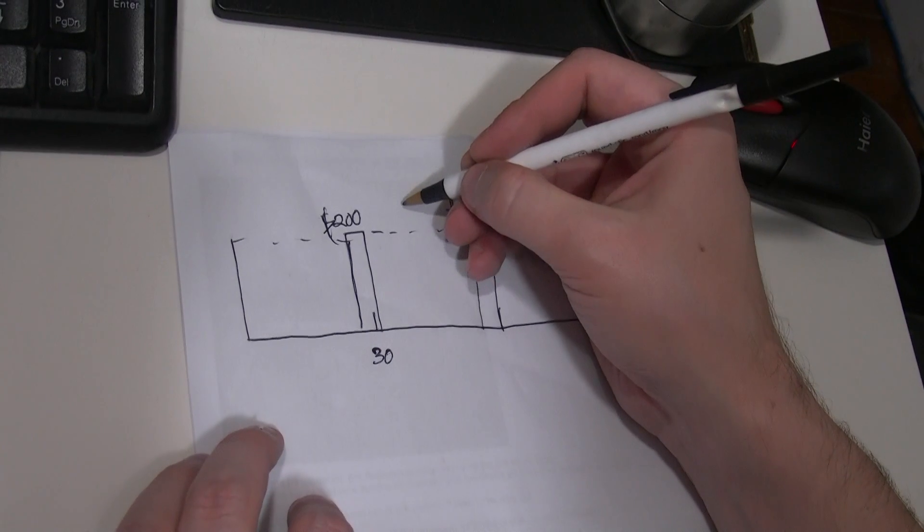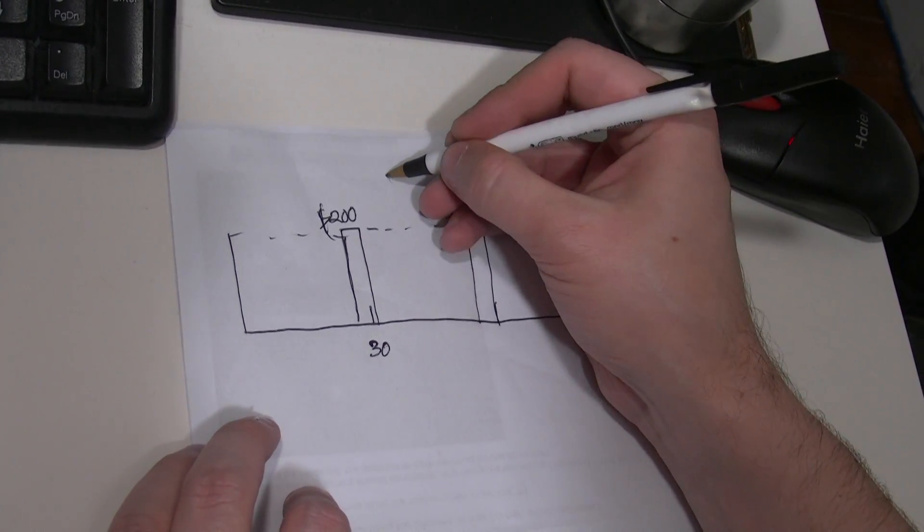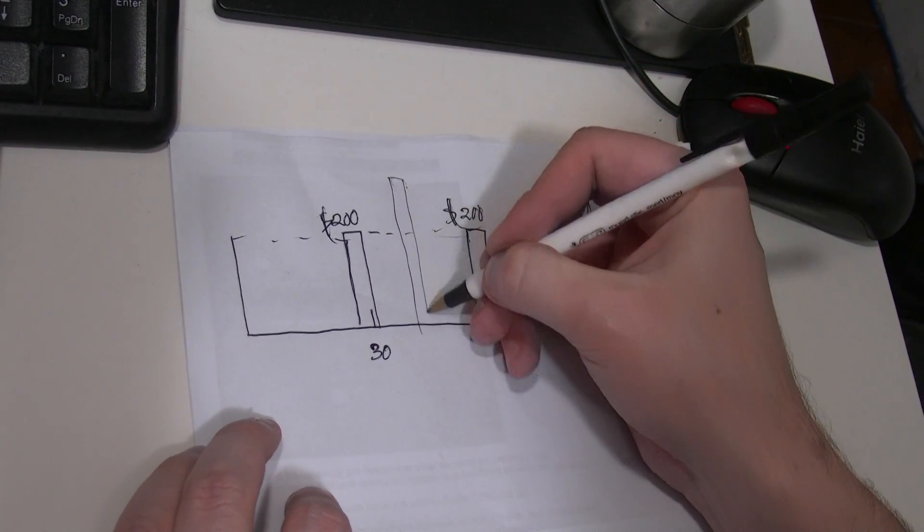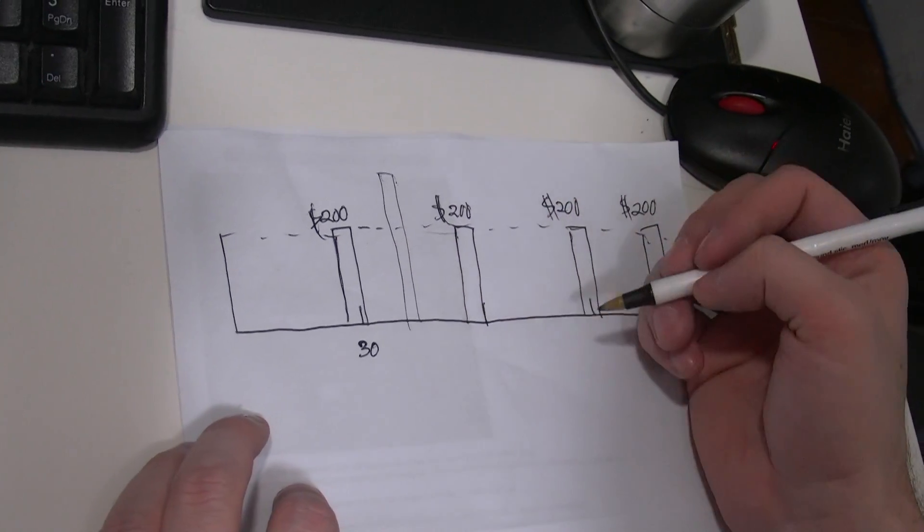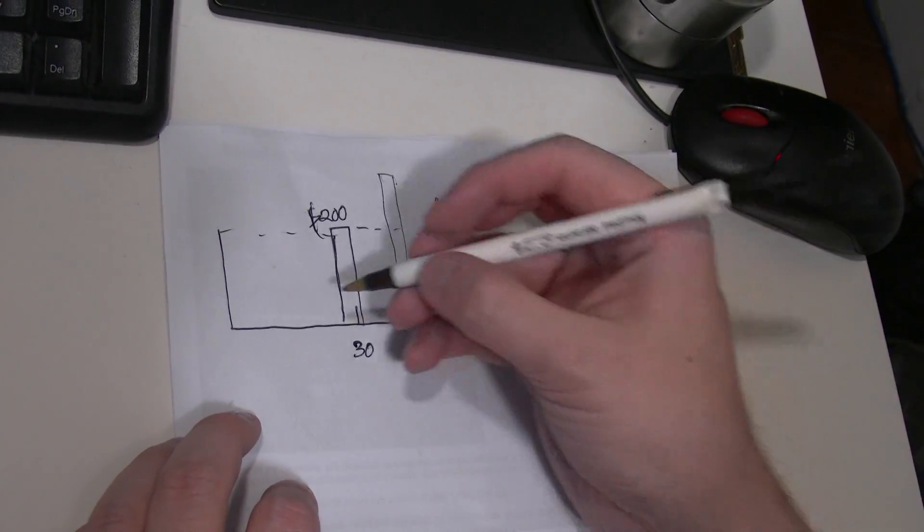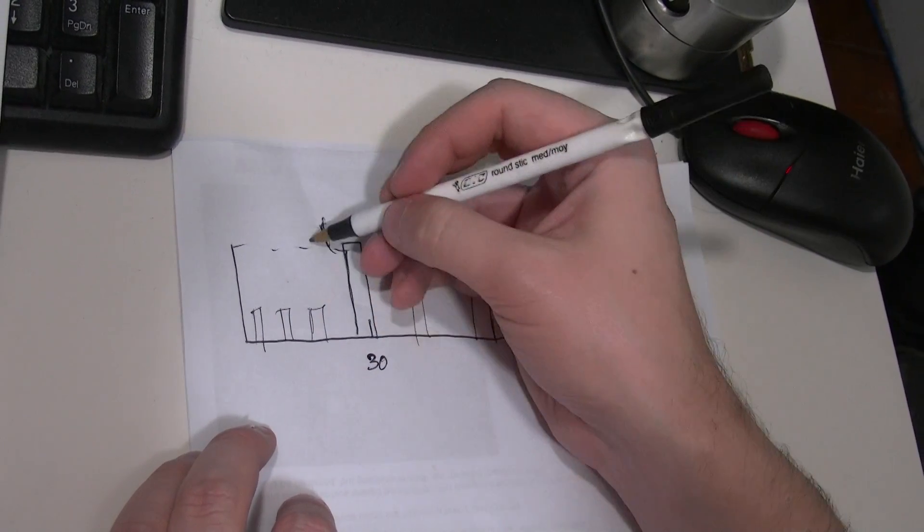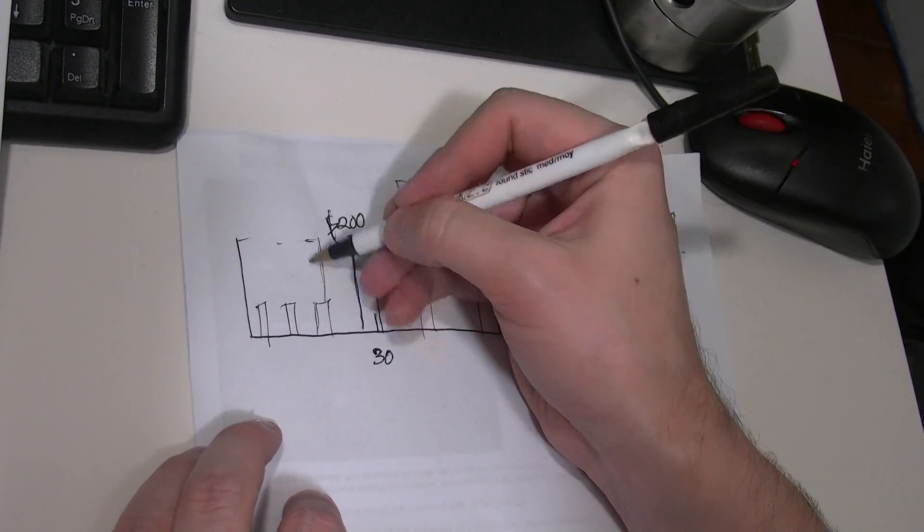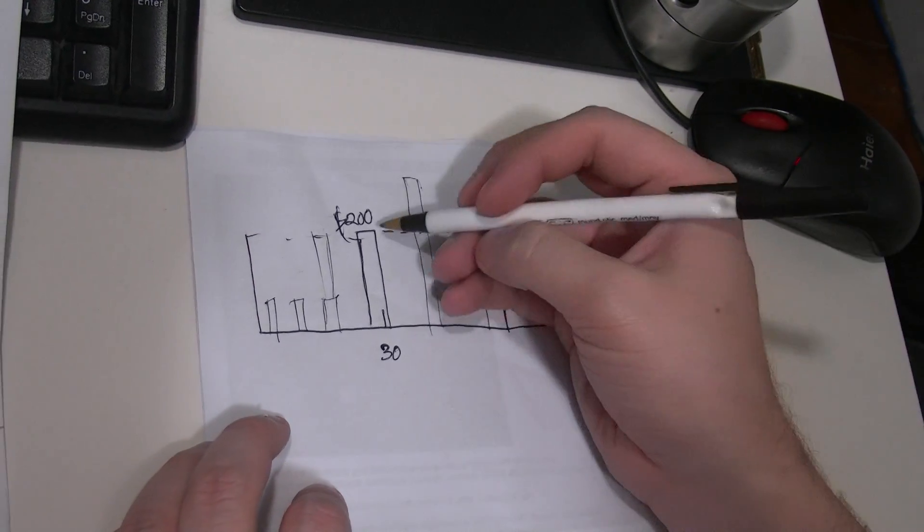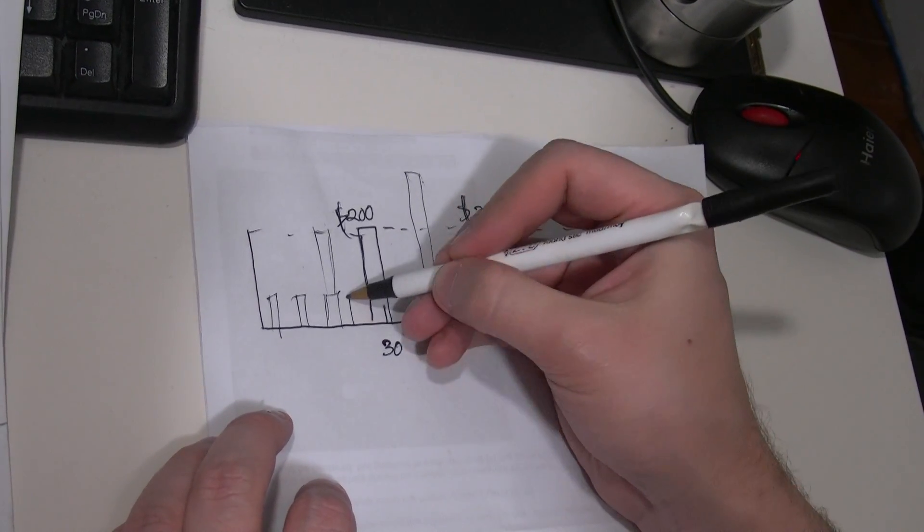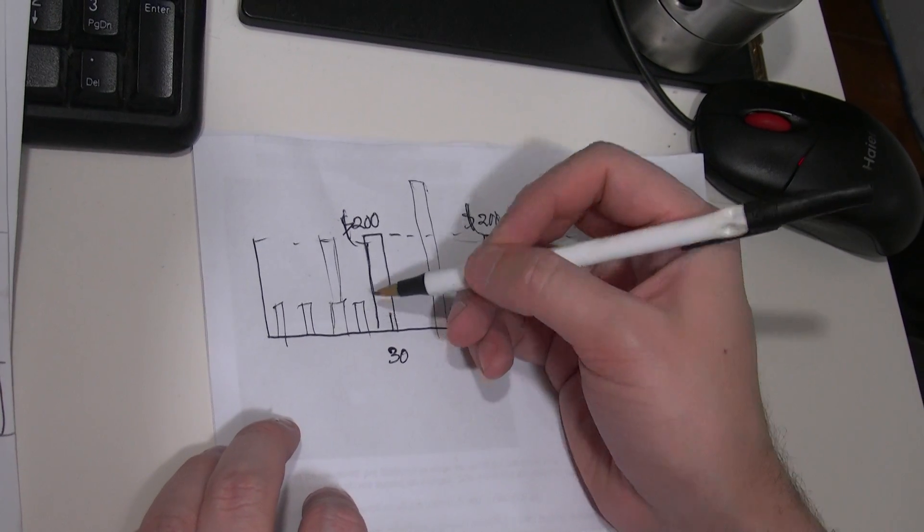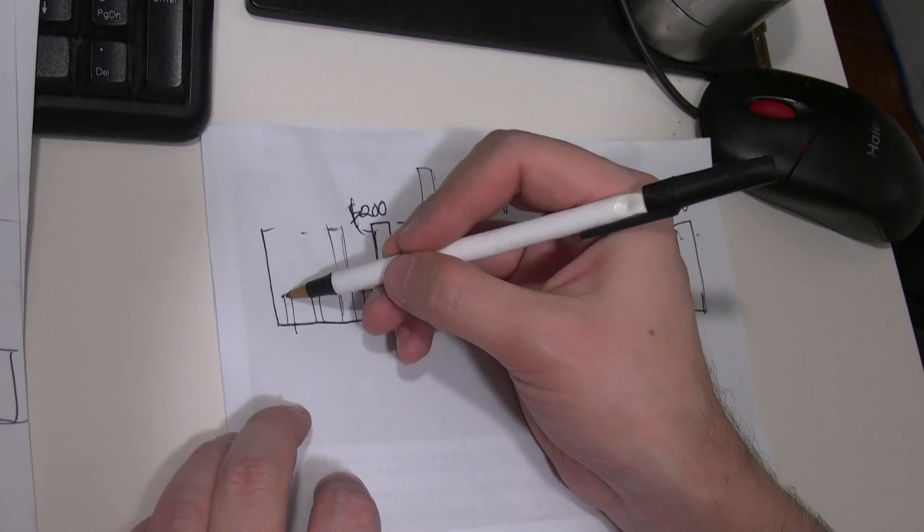Sometimes a customer is going to want to spend more than $200 within a 30-day period, maybe even on one single transaction. Other times they might want to make a bunch of small transactions which can add up to $200, and then the next time that they want to make another small transaction they can't.